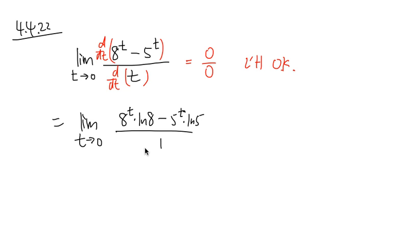And now, after we got this, we are going to plug in 0 into the t's, and let's see what we get. I'm going to get 8 to the 0 times ln 8 minus 5 to the 0 times ln 5. And over 1 never matters, so we don't need to write it down.